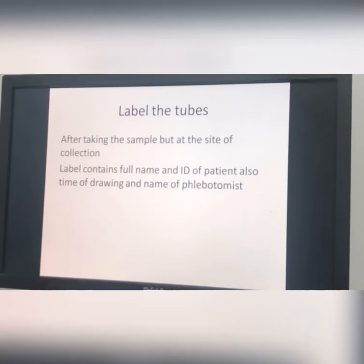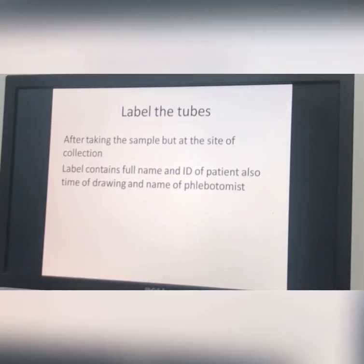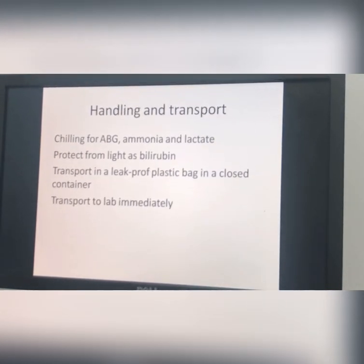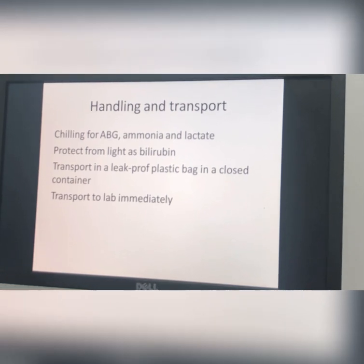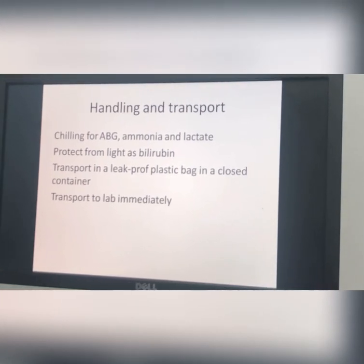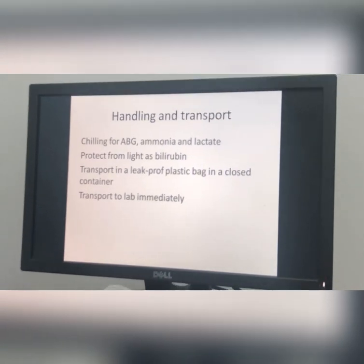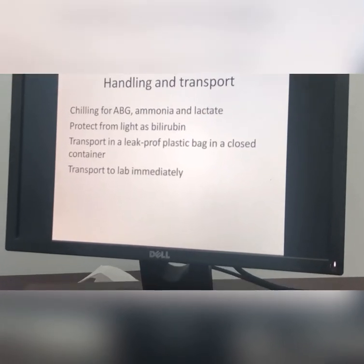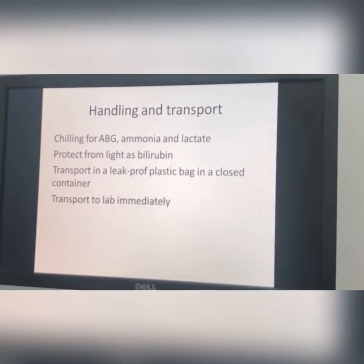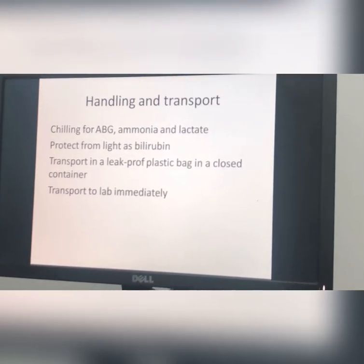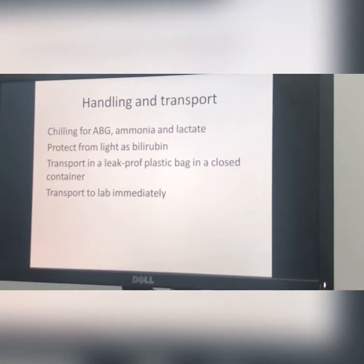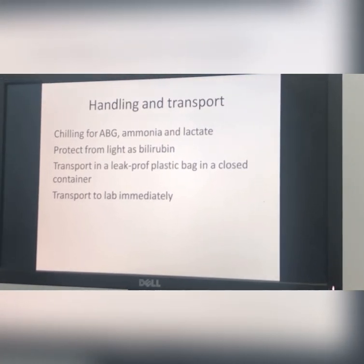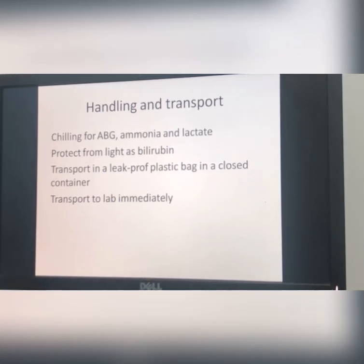We have the OASIS system which identifies the information to be printed on the label. For handling and transport, some samples need special handling before transport to the lab. ABG, ammonia, and lactate need chilling — they must be put in ice. Protect bilirubin from light. During transport, put the sample in a leak-proof plastic biohazard bag in an enclosed container and transport to the lab immediately.